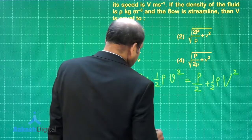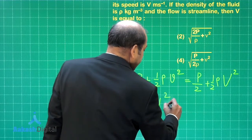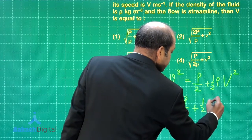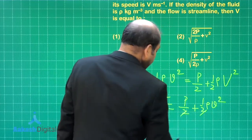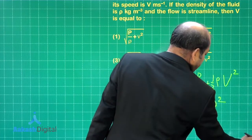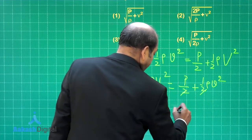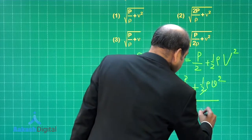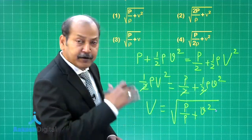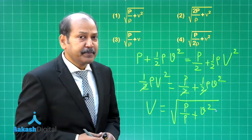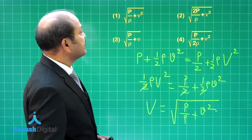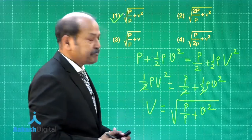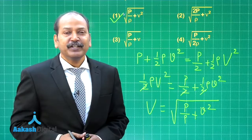That is not difficult at all. We have half rho capital V square is equal to p by 2 plus half rho small v square. Let us cancel these twos everywhere. And the expression for capital V then comes out as under root of p divided by rho plus small v square. That is the expression for the speed at the point where the pressure has become p by 2 Pascal. Let us now check the options and among the options, clearly option 1 matches with our solution. So the question is done. Let us go to the next question now.